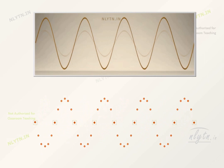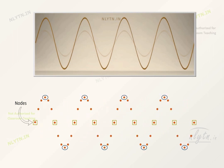Note that these points where the particles do not move at all are called the nodes of a standing wave. And these points where the amplitude of the resultant wave is maximum are called antinodes.